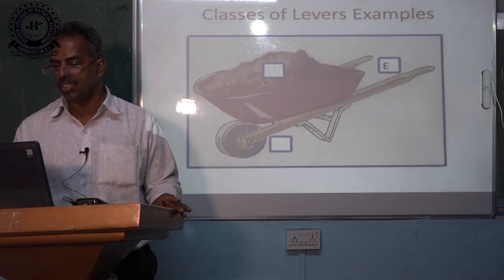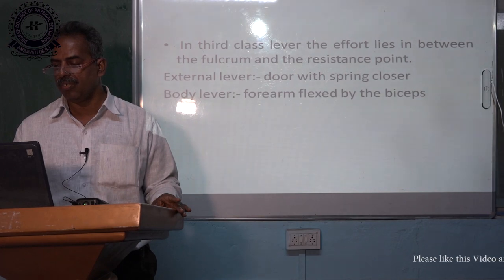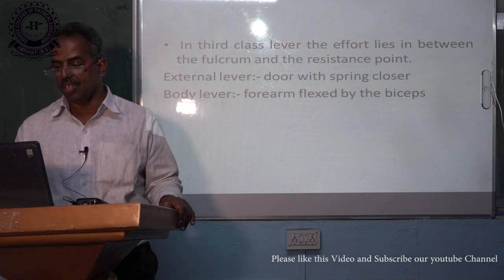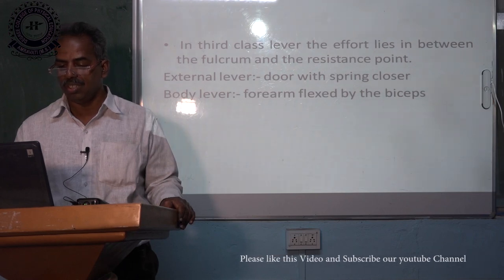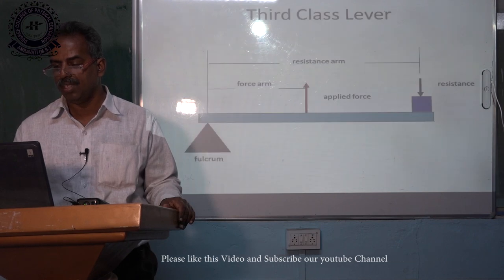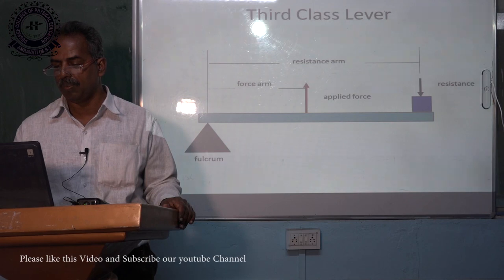An example of a second class lever is the wheelbarrow. In a third class lever, the effort lies between the fulcrum and the resistance point — the effort or force comes in between. An example of an external lever is a door with a spring closer; in the body, the forearm flexed by the biceps is an example. A diagram is shown with the force in the middle, resistance on one side, and the fulcrum on the other, with arrows indicating the direction of force applied.